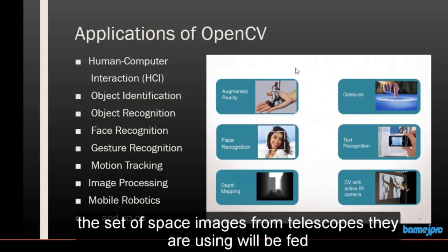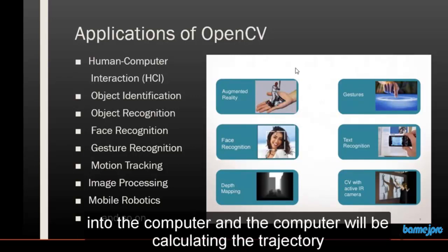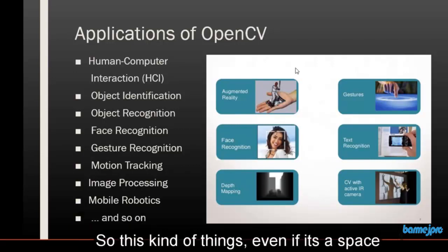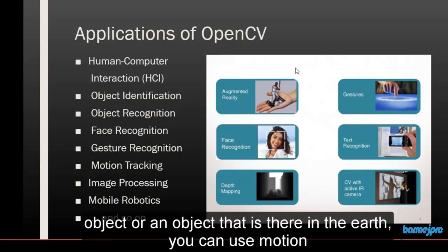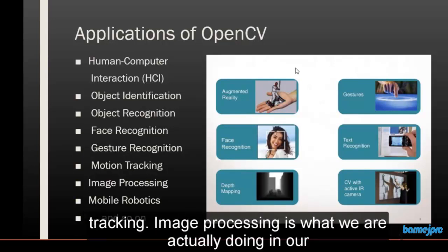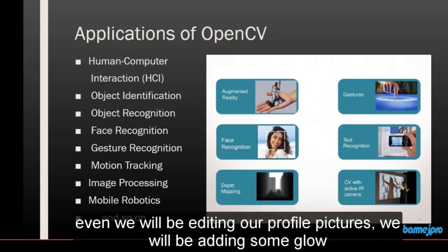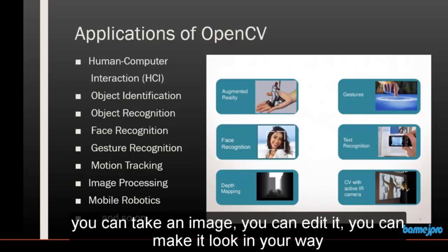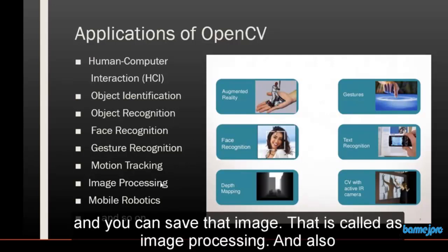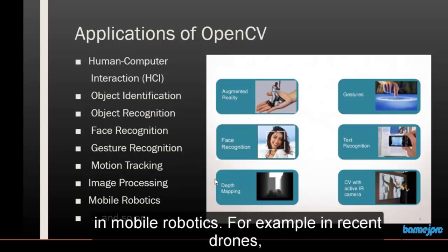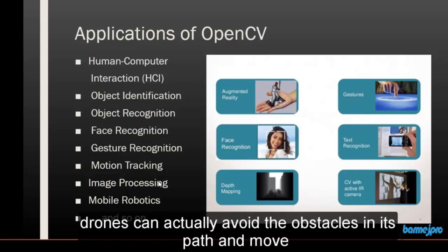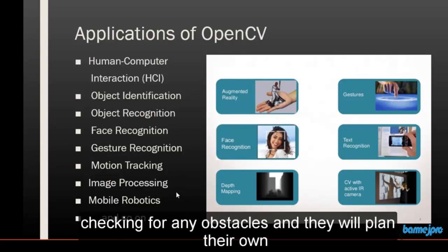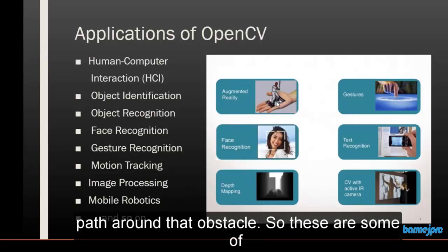A set of space images from telescopes is fed into the computer, and the computer calculates the trajectory, speed and other data associated with that space object. Motion tracking applies whether it's a space object or an object on earth. Image processing is what we do when we edit our profile pictures — adding glow, making adjustments — you take an image, edit it, make it look the way you want, and save it. And also in mobile robotics, for example, recent drones can actually avoid obstacles in their path. They analyze every frame of the image, check for any obstacles, and plan their own path around those obstacles.